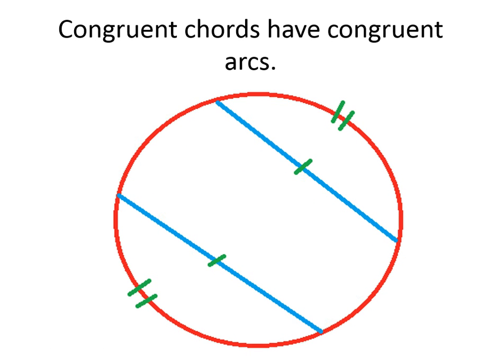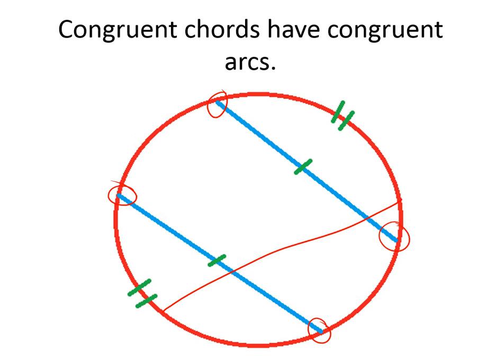The next one is that congruent chords have congruent arcs. If you have two chords that are congruent — the same length — even if they intersect each other, the arcs formed from the endpoints of the chords are going to be congruent. Those minor arcs, those smaller arcs, are going to be congruent to each other as well. Always true, no matter how you draw it. So if I draw one from here to here, and one from here to here, the arcs created are going to be congruent if those chords are congruent.